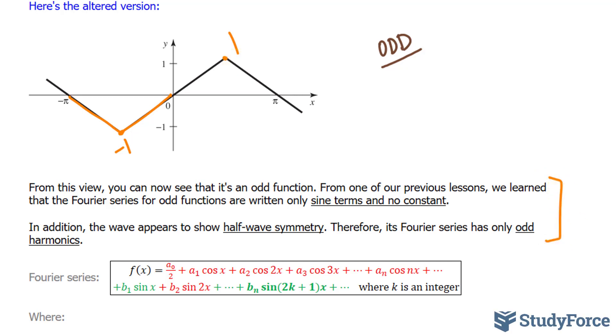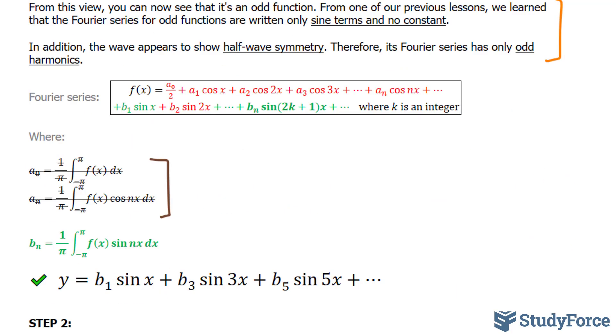Keeping these two things in mind, the Fourier series can now be heavily modified. All of these terms, the ones that contain cosine, can go away because we know only sine will exist. In addition, the odd harmonics means that anything that's even gets eliminated too. Only what's odd is important to us.